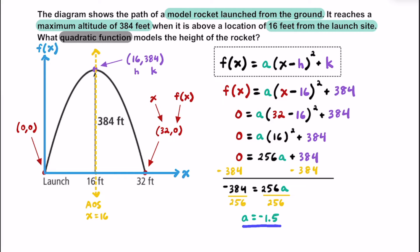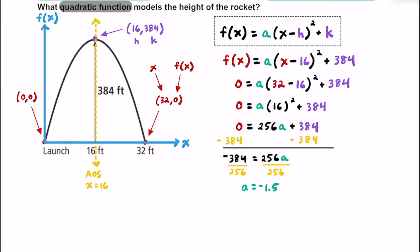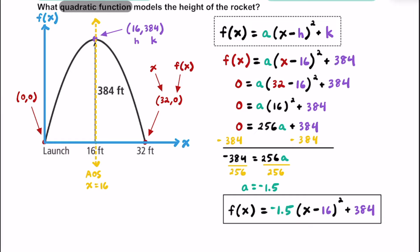Now that we know the value for a, let's substitute that back in. Plugging in the a value of negative 1.5, we get the quadratic function that models this rocket: f(x) = -1.5(x - 16)² + 384.